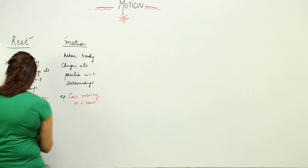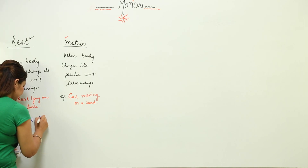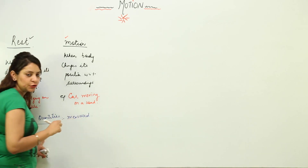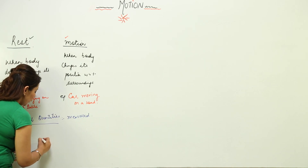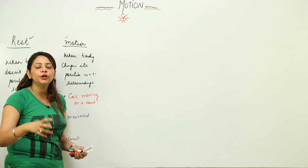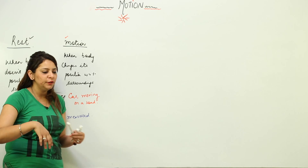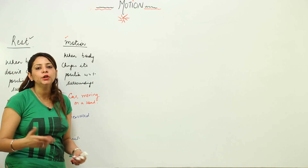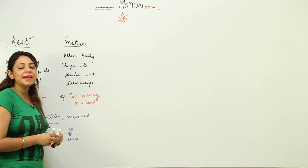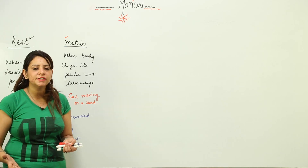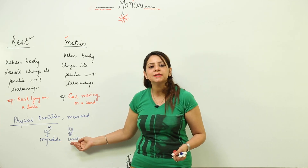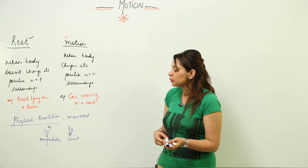Now, what are physical quantities? Physical quantities are those which can be measured. We express a physical quantity in two things: one is the magnitude and the other is the unit. For example, if I go to market and ask for 2 kg of onion, the '2' is the magnitude and 'kg' refers to the unit. Every physical quantity possesses a magnitude and a unit.